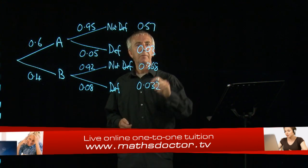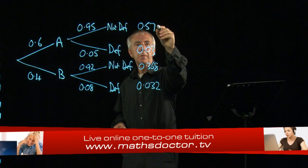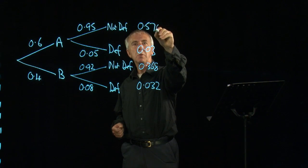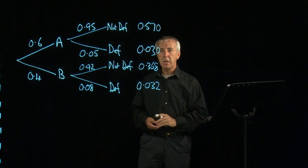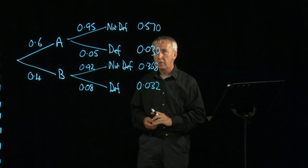And just for convenience let's make them all into the same number of decimal places. We'll call this 570 and 030. And then we've got three decimal places to each of them.